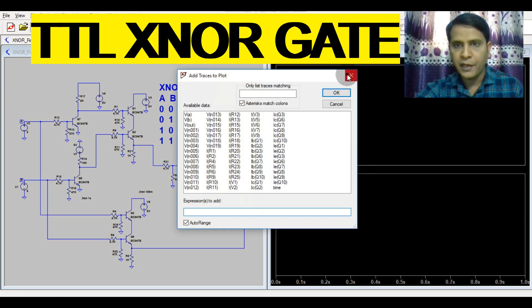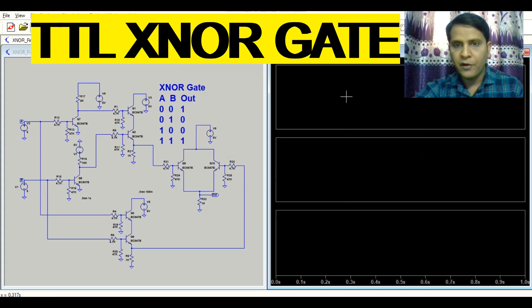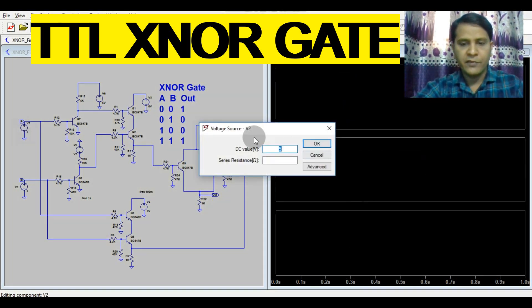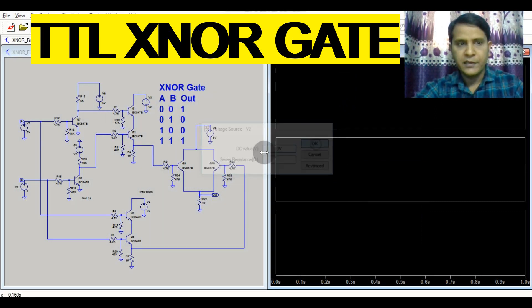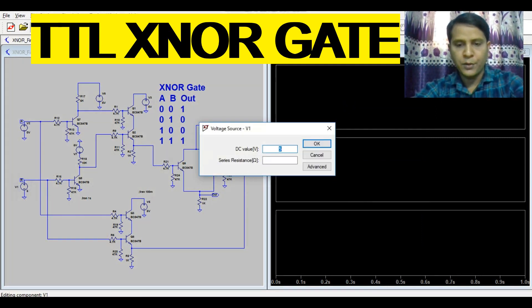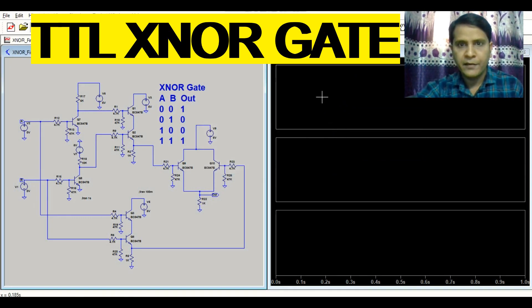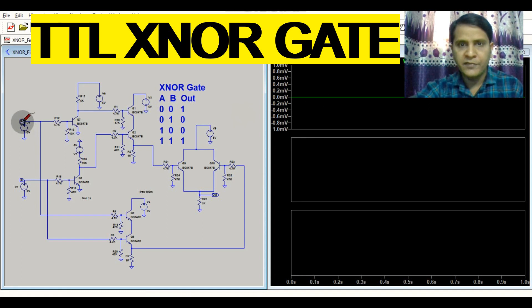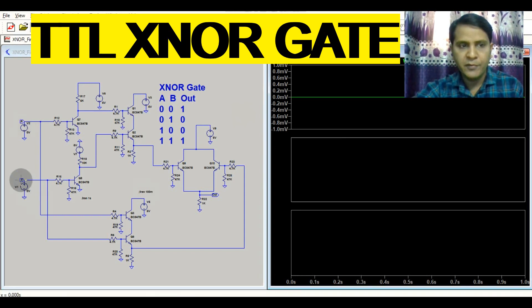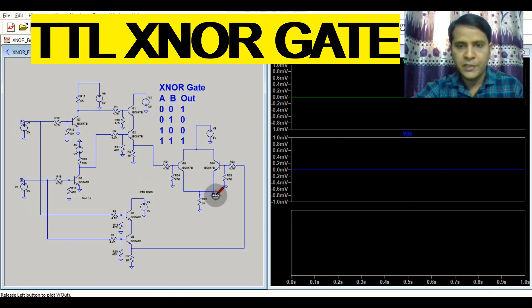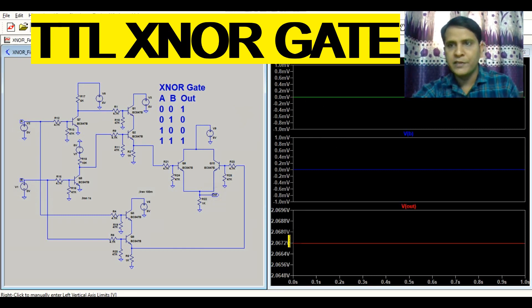So let us consider the first case. The first case says if both inputs are low, right? So here if both inputs are low, that means V equals 0 volt, V equals 0 volt. For this, your output has to be high, so you can see here you are getting 2 volt.